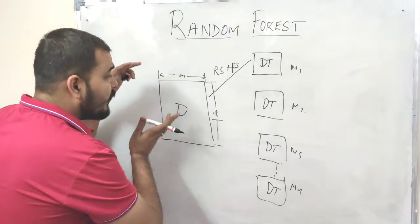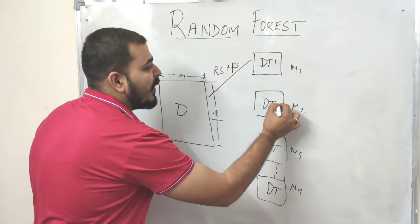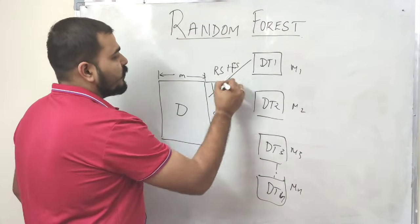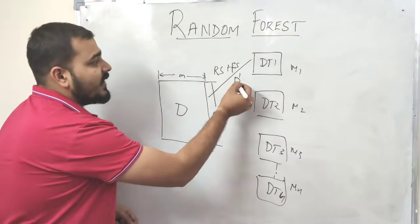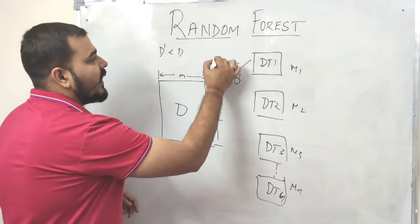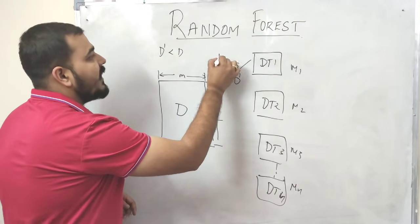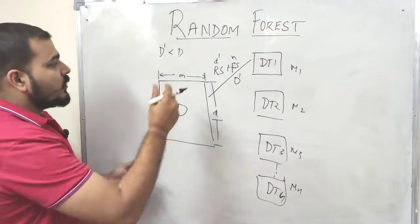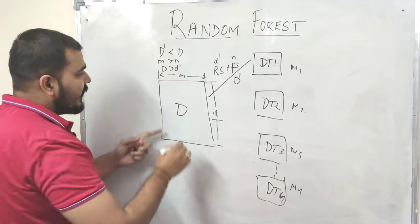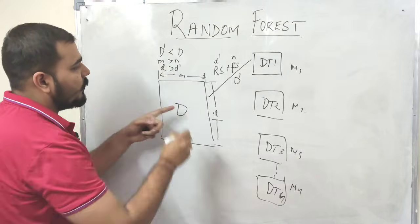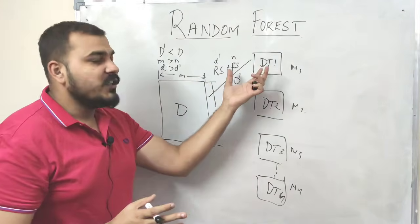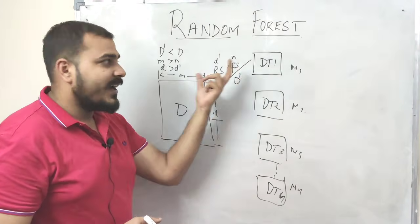That is how bagging works. We take some rows and give them to decision tree 1. The sampled dataset is called D-dash, where D-dash is always less than D since we are only taking a sample of records. Similarly, we take N number of features, where M is always greater than N. This sampled data is given to decision tree 1, which then gets trained on it.